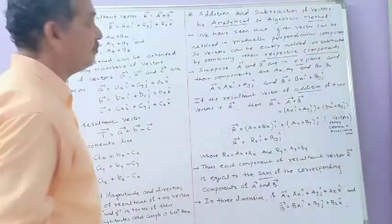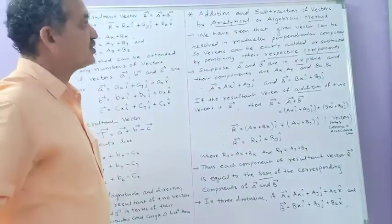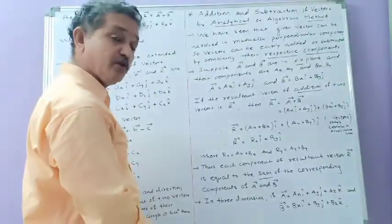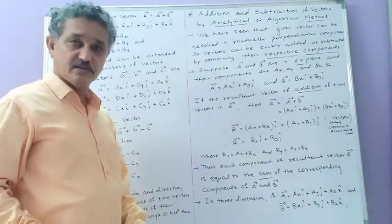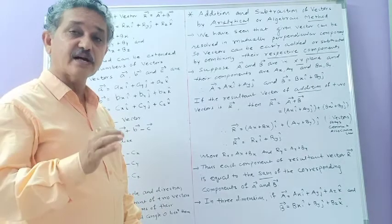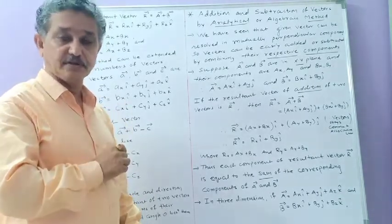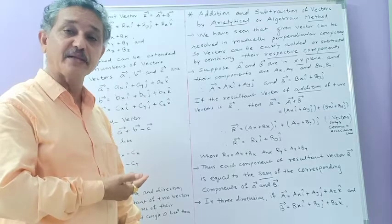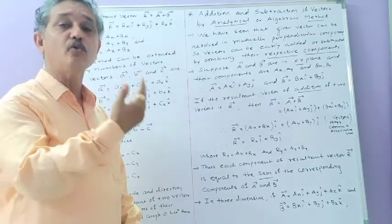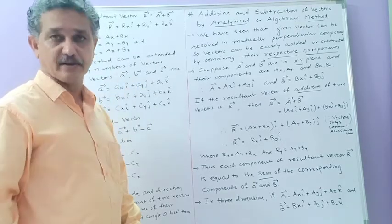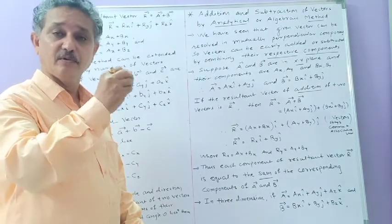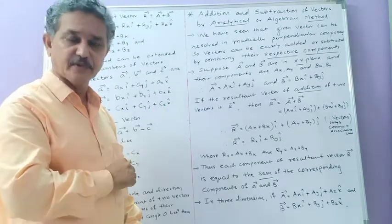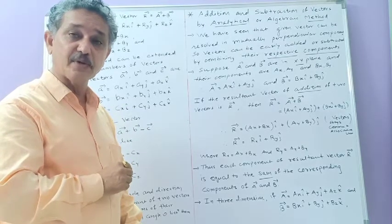Now let us look at the method of addition and subtraction of vectors by the algebraic or analytical method. We have studied the graphical method earlier, but the graphical method is restricted to determining the resultant of only two or three vectors. Similarly, the parallelogram method is also useful only for two vectors. When more than three or four vectors are involved, the graphical method becomes complicated, tedious, and less accurate.